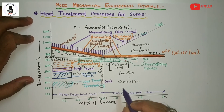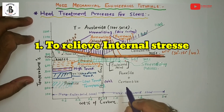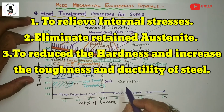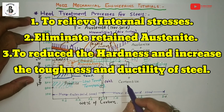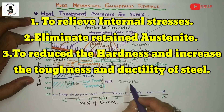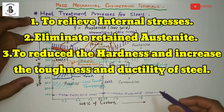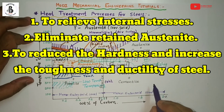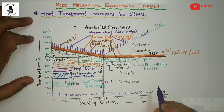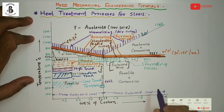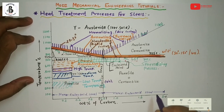Basically this process is used to relieve internal stresses induced during the quenching process, eliminate retained austenite to form stable phases, reduce hardness, and improve toughness and ductility in the steel structure. In simple terms, the tempering process is always followed by the hardening process.